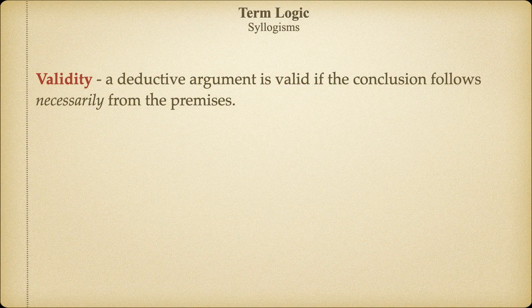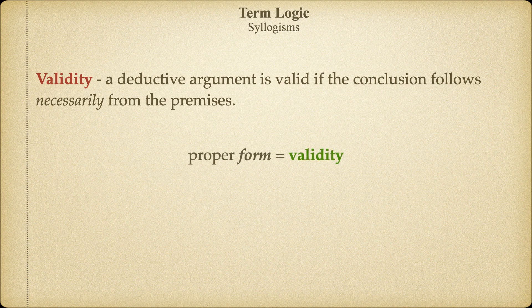You'll recall that we define validity as the condition of a deductive argument when the conclusion must follow from the given premises. As we're about to see, this has everything to do with how the argument is structured. In the case of categorical syllogisms, that means getting the major, minor, and middle terms in the proper place in the argument. It's all about the form or structure of the argument.